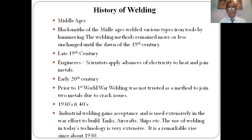History of welding: From the metal ages, blacksmiths welded various types of iron tools by hammering — that is basically forge welding. The welding methods remained more or less unchanged until the dawn of the 19th century. In the late 19th century, engineers and scientists applied advances in electricity to heat and join metals. In the early 20th century, prior to the First World War, welding was not trusted as a method to join two metals due to crack issues. In the 1930s and 40s, industrial welding gained acceptance and was used extensively in the war effort to build tanks, aircraft, ships, etc. The use of welding in today's technology is very extensive — a remarkable rise since 1930.